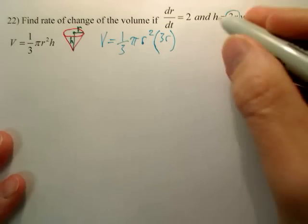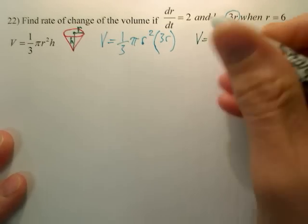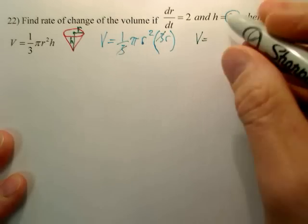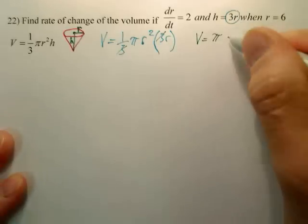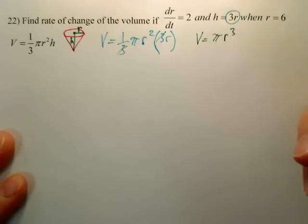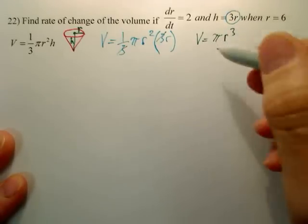Now I can do that since the information is right here. Now I have a new equation, which hopefully you see the three is canceling, and I have pi r squared times r is r to the third. That's it. That's your new equation.